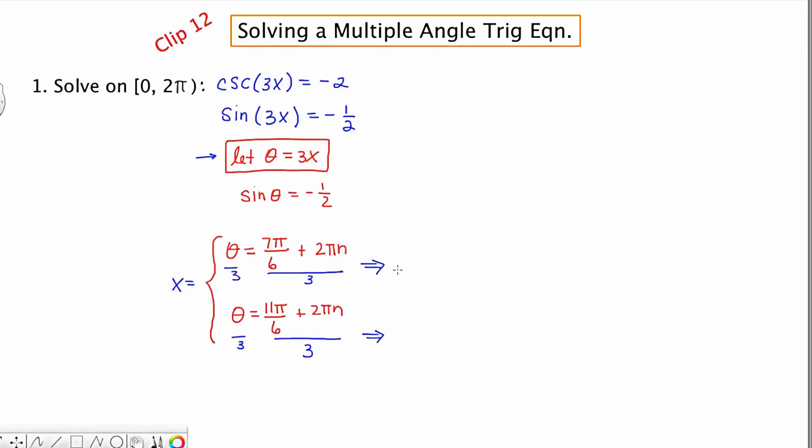Now this is going to yield a new expression. 7 pi over 6 divided by 3 is now 7 pi over 18. And instead of adding 2 pi n, I'm going to add 2 pi over 3 n. And 11 pi over 6 divided by 3 is 11 pi over 18, again, plus 2 pi over 3 n.